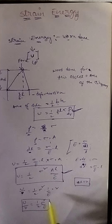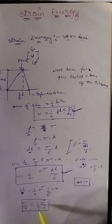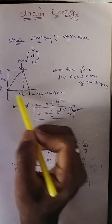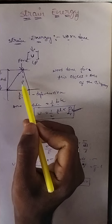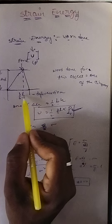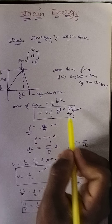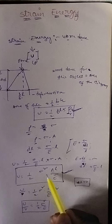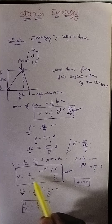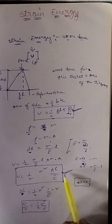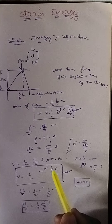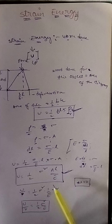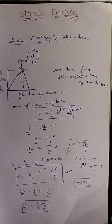So the modulus of resilience equals U/V = ½ × σ² × A × L / E divided by A × L, which gives modulus of resilience = ½ × σ² / E. To summarize: strain energy U = ½Pδl = ½σ²AL/E, and modulus of resilience U/V = ½σ²/E.